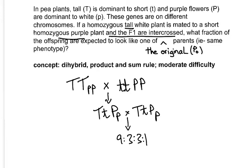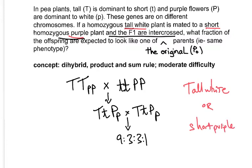What fraction of the offspring are expected to look like one of the original parents — that is, tall and white, or short and purple? What we're going to do is figure out the probability of tall white and then add that to the probability of short and purple. Let's do tall white first.